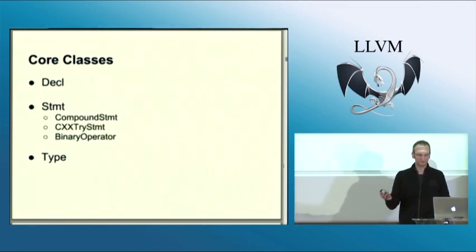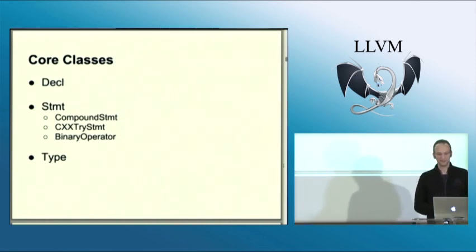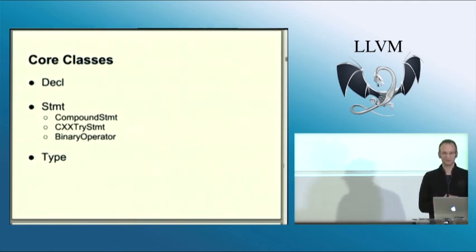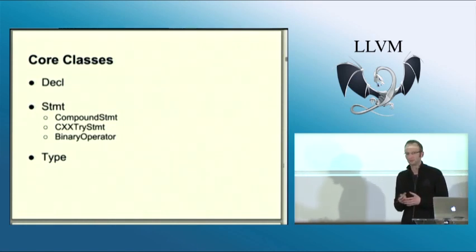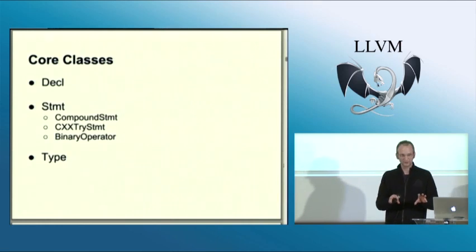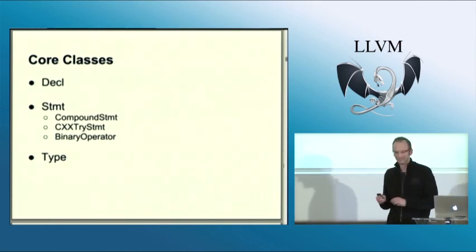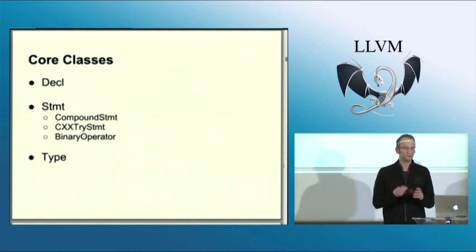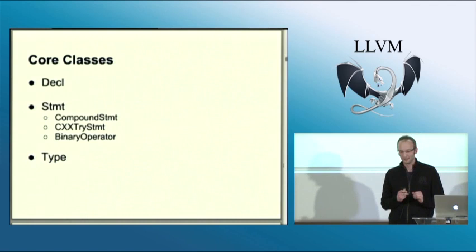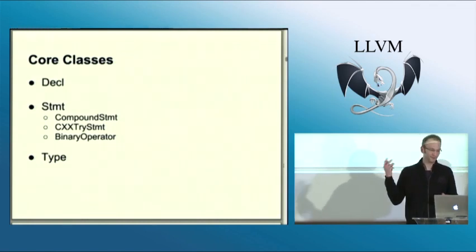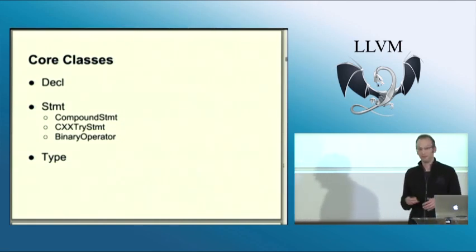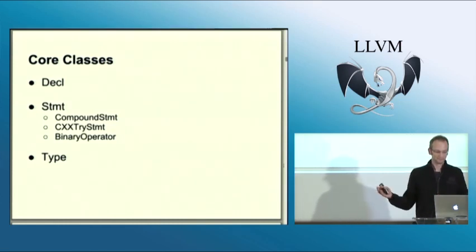For statements, there are common types like the compound statement, CXXTry statement, and binary operator. Binary operator is an expression, and in Clang's AST expressions are statements. If you ask Doug Gregor about that, even though it's purely text-based, you'll basically see him say 'I was young and I thought that was a good idea to save some bytes in the AST.' One of the interesting problems this creates is there's no place to store the semicolon, and if you do source-to-source transformations, that's a problem.